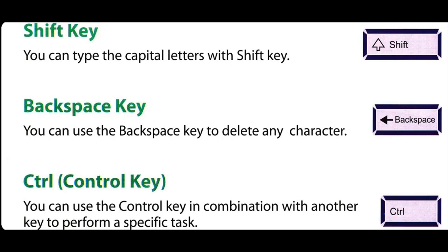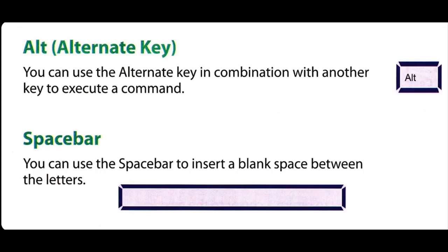Control key: You can use the Control key in combination with another key to perform a specific task. Aap kisi khaas kaam ko anjaam dene ke liye kisi aur key ke saath milkar Control key ko istemal kar sakte hain. Alternate key: You can use the Alternate key in combination with another key to execute a command. Aap command par amal daramad karne ke liye Alternate key ko kisi aur key ke saath milkar istemal kar sakte hain.